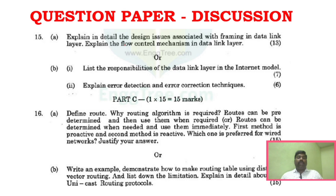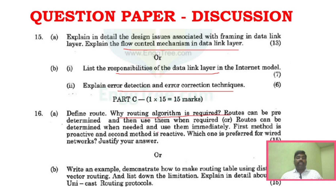For Unit 5 in the 2023 paper: data link layer topics including flow control mechanism, responsibilities of the data link layer, error detection and error correction techniques. There is also a scenario-based question on routing — proactive or reactive — and a question on how to build a routing table using distance vector routing. DVR implementation: given a particular network, you can create and solve the routing table easily if you understand the DVR concept from the available videos.